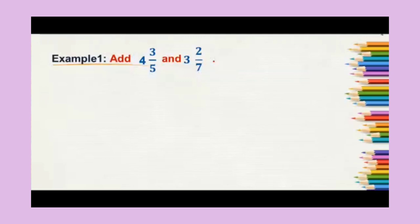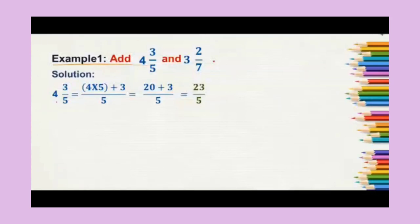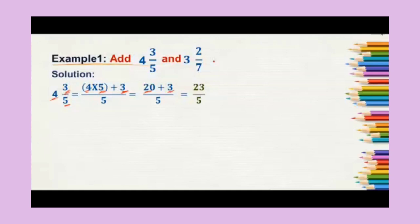In the first step, we will convert the mixed fractions into improper fractions. To convert a mixed fraction into an improper fraction, you multiply the whole number by the denominator and then add the numerator. Here the whole number is 4, denominator is 5, and numerator is 3. So 4 times 5 is 20, plus 3 gives us 23. The denominator remains the same, that is 5. So 4 3/5 becomes 23/5.